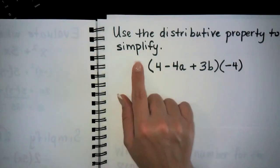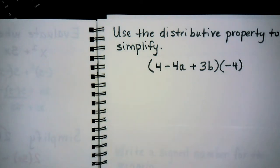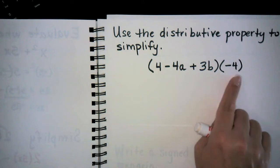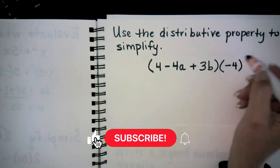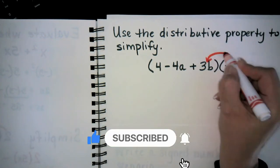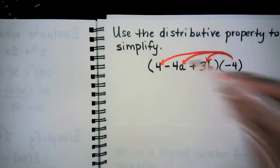In this video we'll use the distributive property to simplify this expression. Notice that when you have a number being multiplied times a parentheses, you want to distribute that number to every term that's in the parentheses. When I say distribute, I mean you're going to multiply.